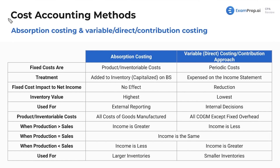We're going to start off talking about cost accounting methods by discussing the all too important absorption costing versus variable costing. These names are all synonyms: variable costing is the same as direct costing, same as contribution costing. You're much more likely to hear variable or direct, but just know that it's also known as contribution costing.